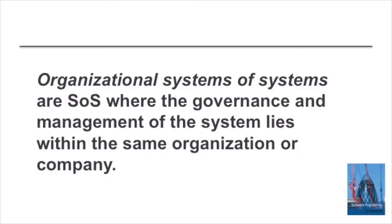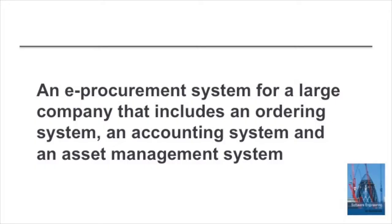In an organisational system of systems, the key characteristic is that the governance and the management are within the same organisation or company, so the management can be directly instructed to implement the governance aims and objectives. An example of such an organisational system of systems might be an e-procurement system in a large company that integrates an asset management system, an accounting system, and an ordering system.